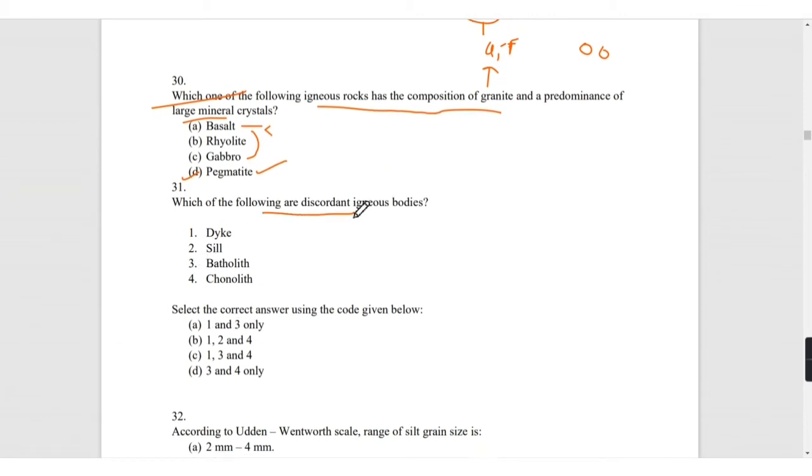Which of the following are discordant igneous bodies? Dyke is discordant, but sill is not discordant, it will be parallel. Discordant means cutting across the layers.